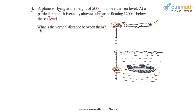We have to find the vertical distance between them. This problem is simple enough to be solved without any use of integers — by simply seeing that the plane is 5000 meters above the sea level and the submarine is 1200 meters below the sea level.